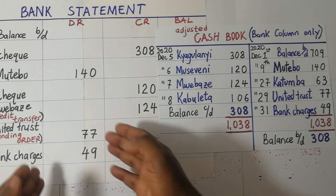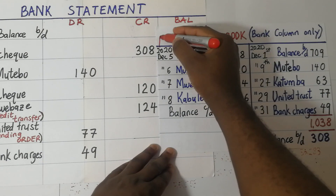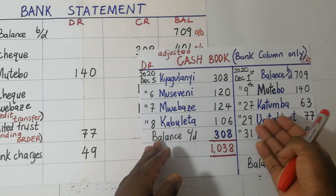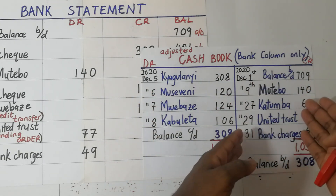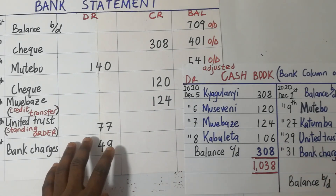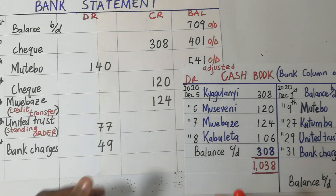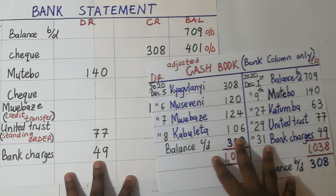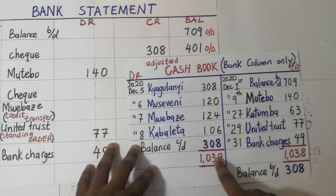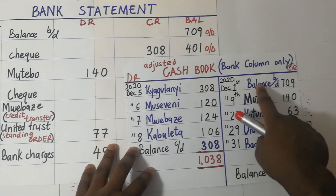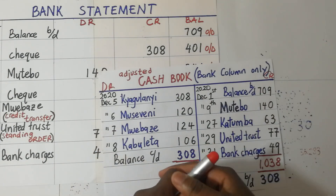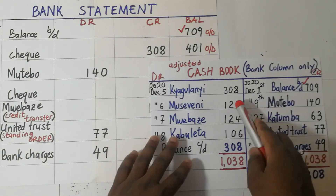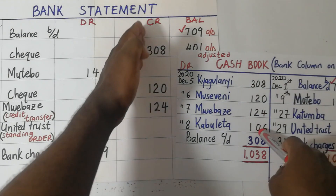Let's look at the checks that we received. This is the debit side of the cash book; this is the credit side. When we receive cash in the cash book, we debit; when we are giving out cash, we credit. However, when it comes to the bank statement, it is the reverse — when we put money in the bank account, the bank credits our account; when we are removing money, it debits the account. The things on the debit side of the cash book should correspond to the things on the credit side of the bank statement. The opening balance for this cash book was a credit balance of 709, which is a bank overdraft.